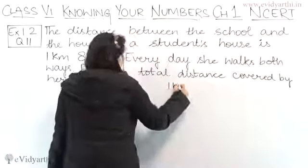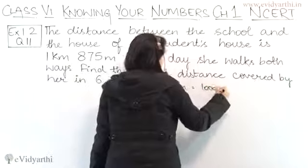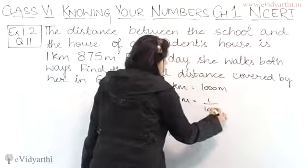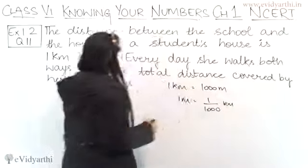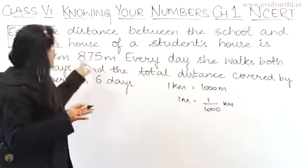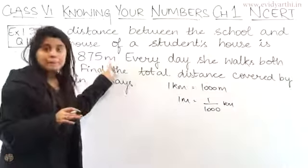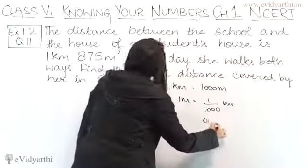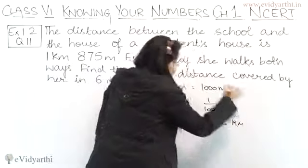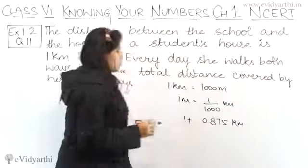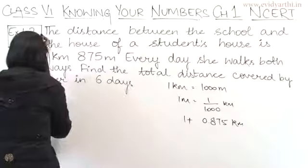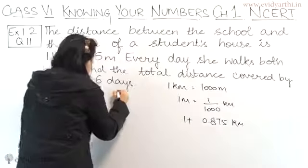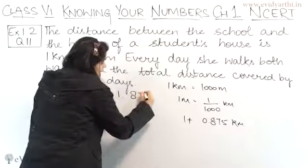Now, 1 km is equal to 1000 m, so 1 m is equal to 1 upon 1000 km. So here 875 m will be equal to 0.875 km. Therefore, 1 km 875 m equals 1 plus 0.875, which is 1.875 km.